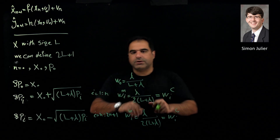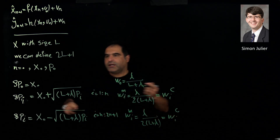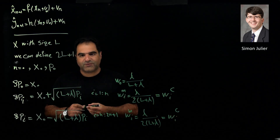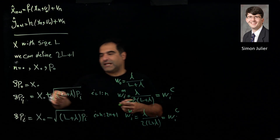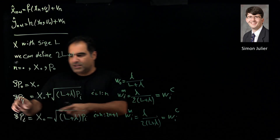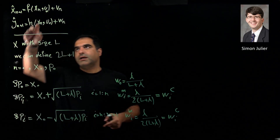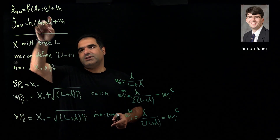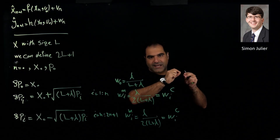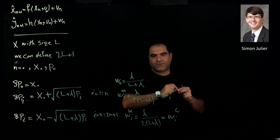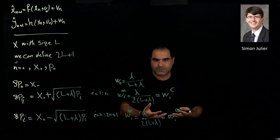We generate 2l plus 1 predefined points in each iteration and propagate these sigma points into the transition and measurement function to predict the mean and covariance of the predicted states and predicted output.